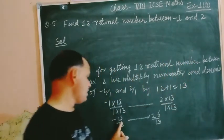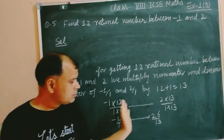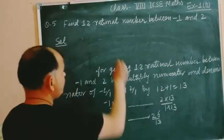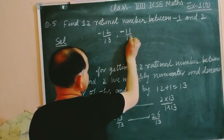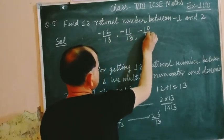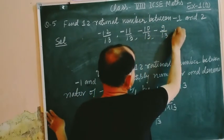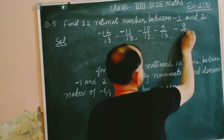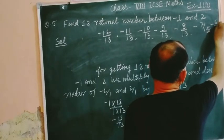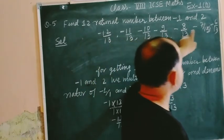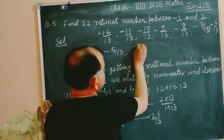Here minus 13 upon 13 so we get on the right side minus 12 upon 13, minus 11 upon 13, minus 10 upon 13, minus 9 upon 13, minus 8 upon 13, minus 7 upon 13, minus 6 upon 13.